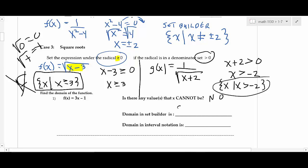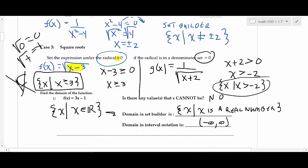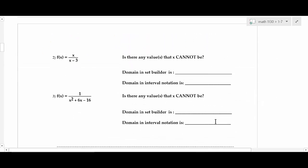For the linear function, in set builder notation, write: the set of x such that x is an element of the real number system. The symbol for 'element of' looks like a curved E, and the symbol for real numbers is ℝ. In interval notation, the domain of a linear function is (−∞, ∞). You want to be flexible and able to write the domain in both forms.